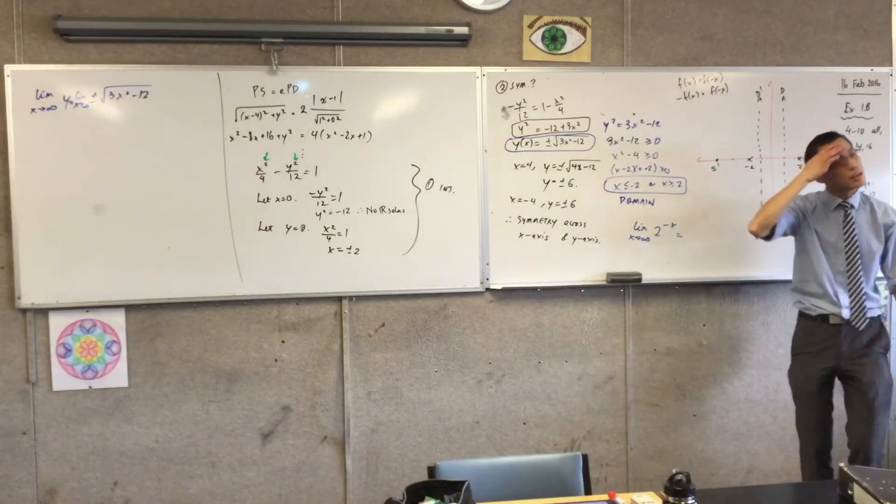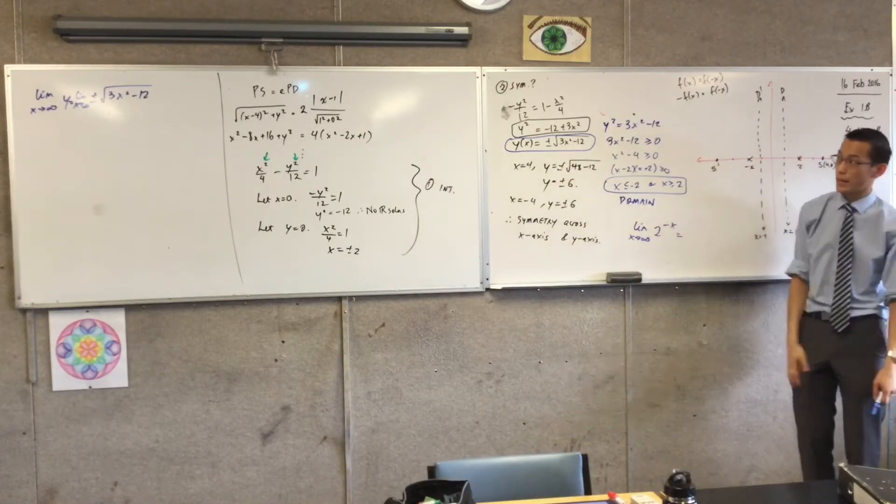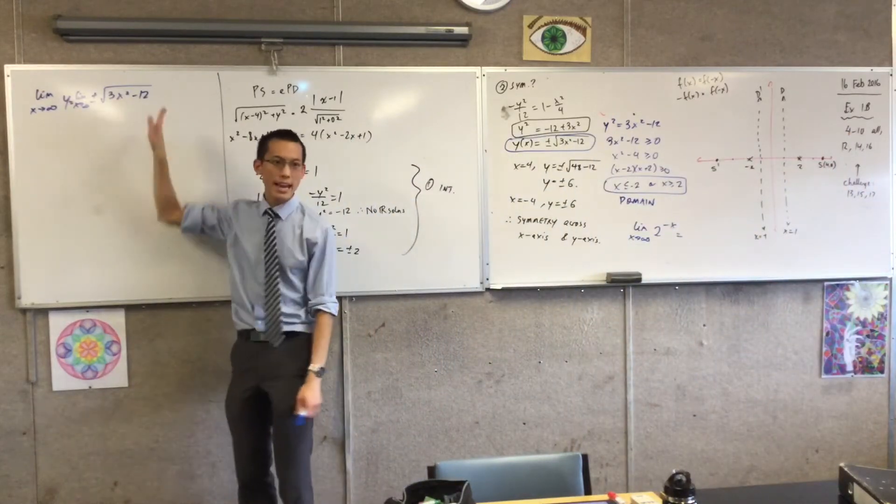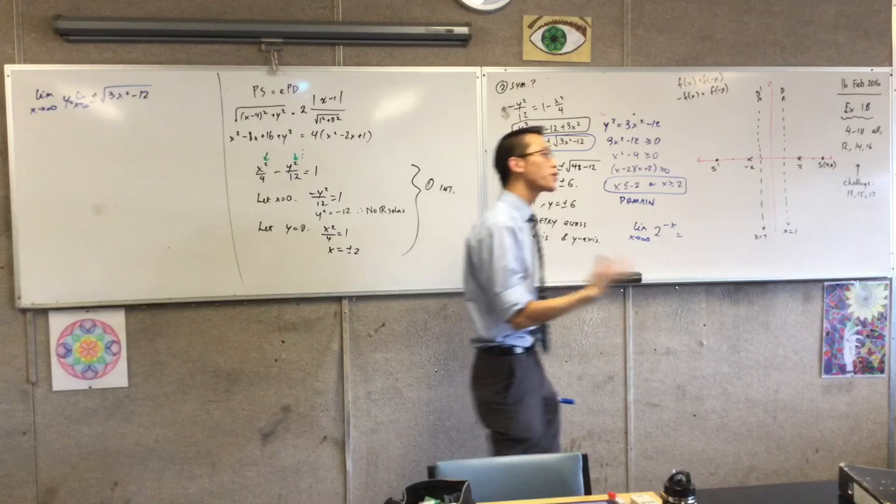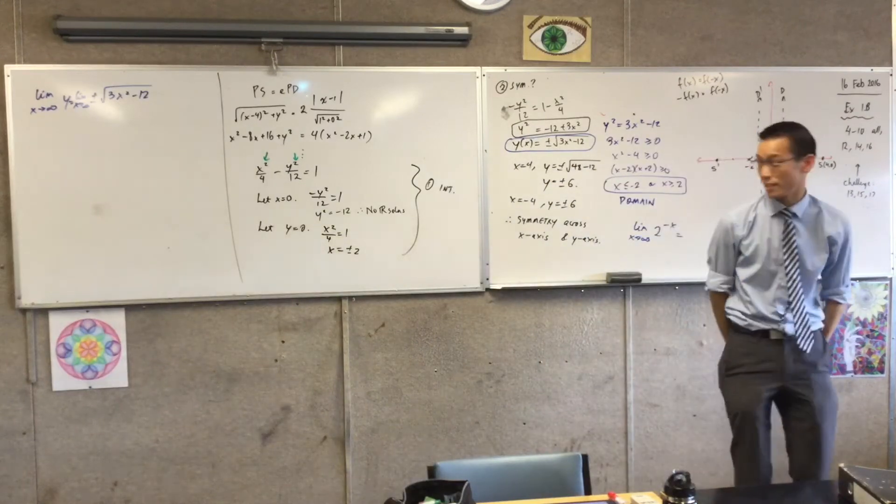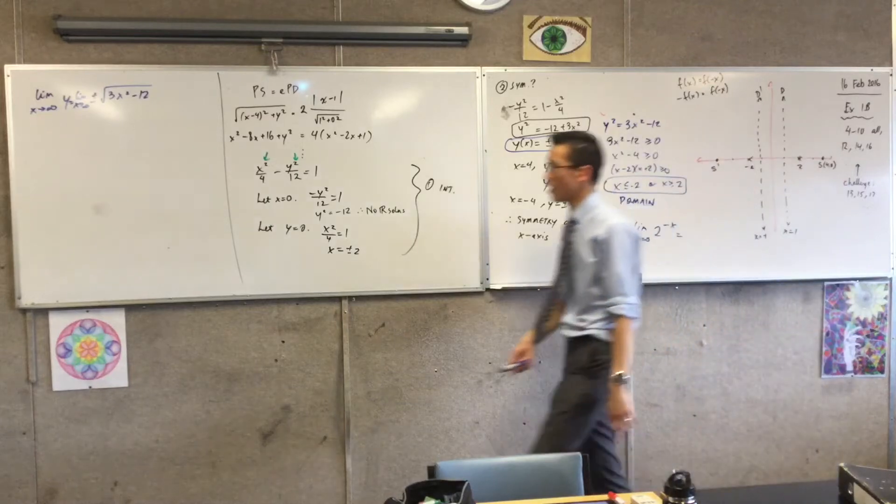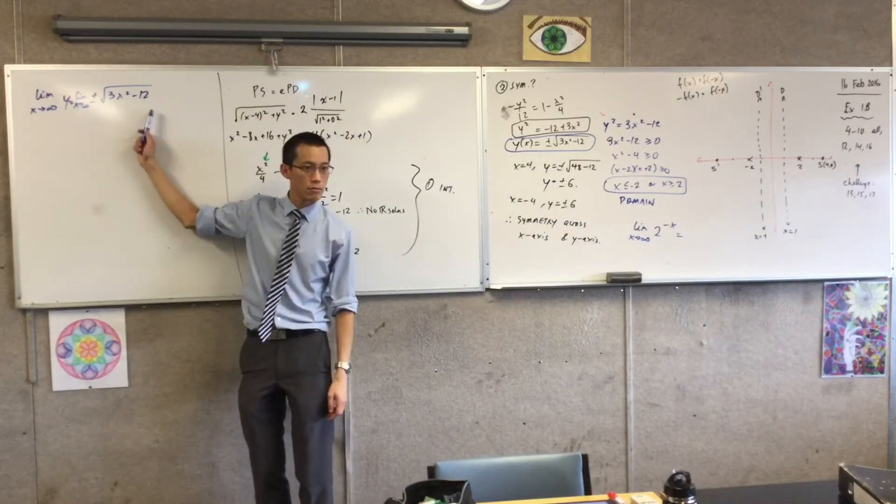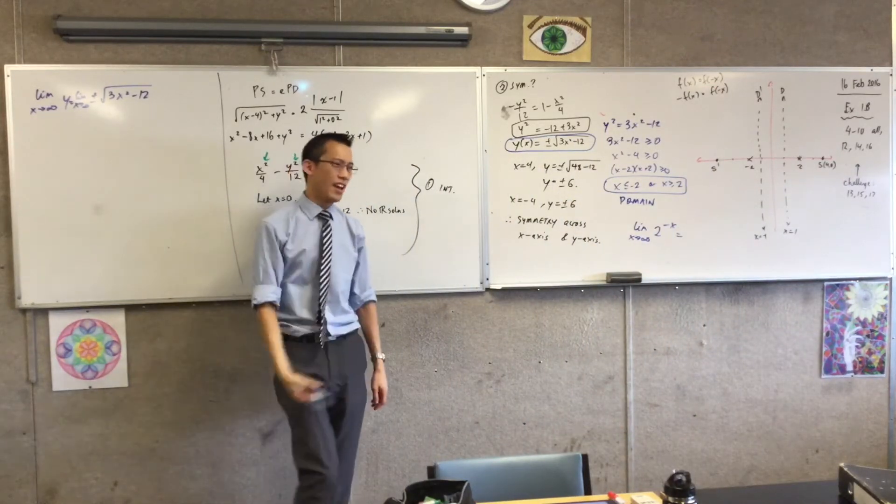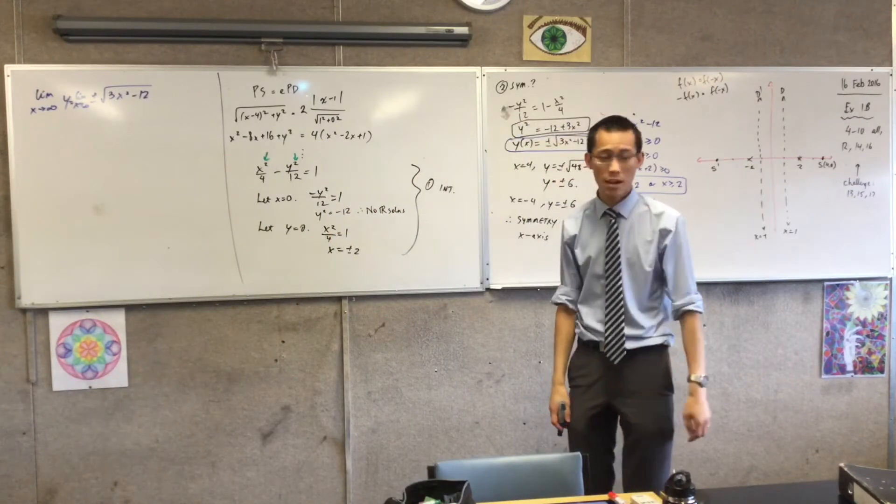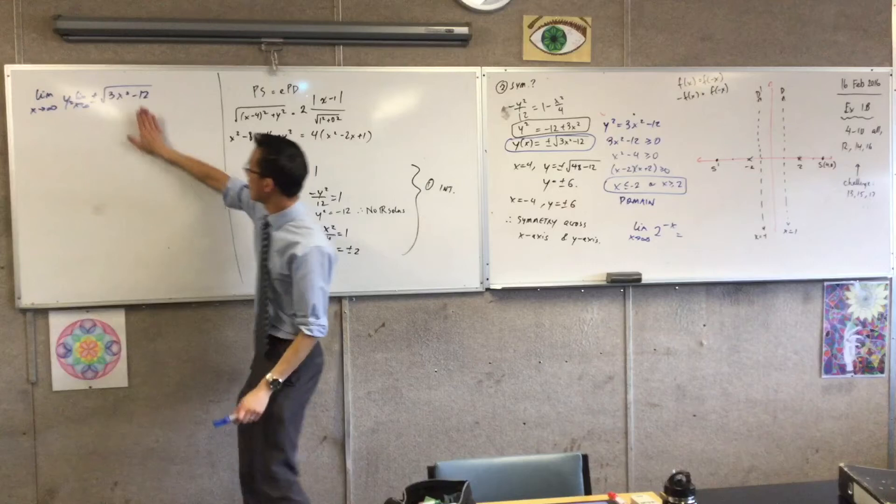Now, stare with me at this for a second. Have a look at the terms you've got on the view: 3x squared and negative 12. Now, remember, I'm going off to infinity, right? Infinity. So what does your intuition tell you will happen to this negative 12? What do you do? Insignificant. Yeah, insignificant. He's going to become so tiny, I can pretty much ignore him, right?